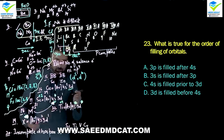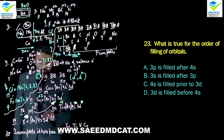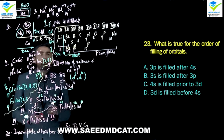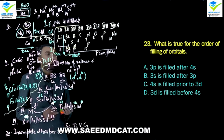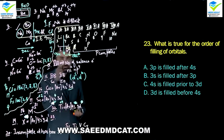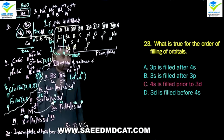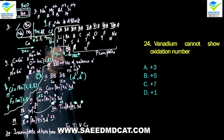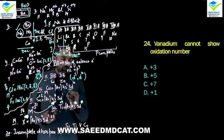Question 23: What is true for the order of filling of orbitals? Remember that after argon, 4s is filled before 3d. So we can say: 4s is filled prior to 3d. 4s fills first and 3d fills afterward. Charlie option is correct.